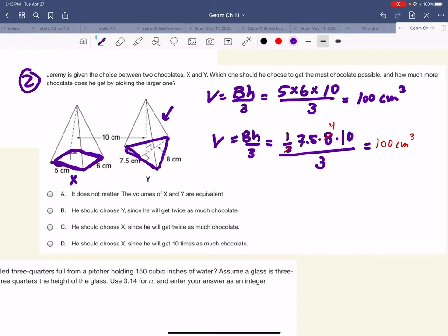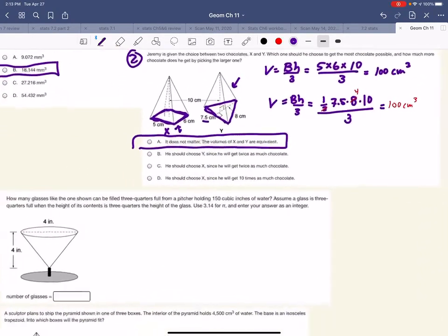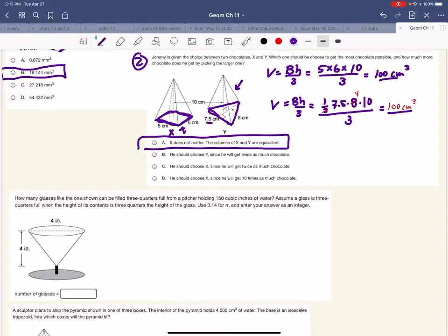So same thing, right? So it doesn't matter, these volumes are equivalent. They look different, but it looks like this triangle at the bottom is quite a bit bigger than this rectangle. And then somehow the slightly different shape, both shapes still equal 100 centimeters cubed.